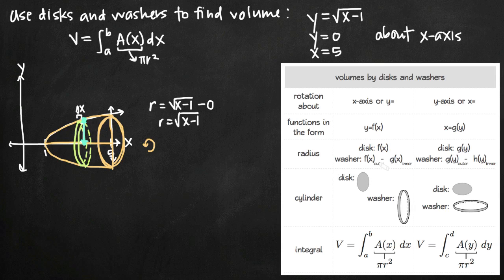Which makes sense because our table tells us that our radius, if we have a disk, which we do, is just f of x. And we know that f of x is from our original function y equals f of x, so we have square root of x minus 1. So now that we have our radius, we can plug that in because our formula for volume is the integral of A(x), and A(x) is just pi r squared. So volume will be the integral of pi times this radius squared. We need our limits of integration, and our limits of integration are going to be from 1 to 5, because the leftmost value for which our solid is defined is 1, and the rightmost value is 5.